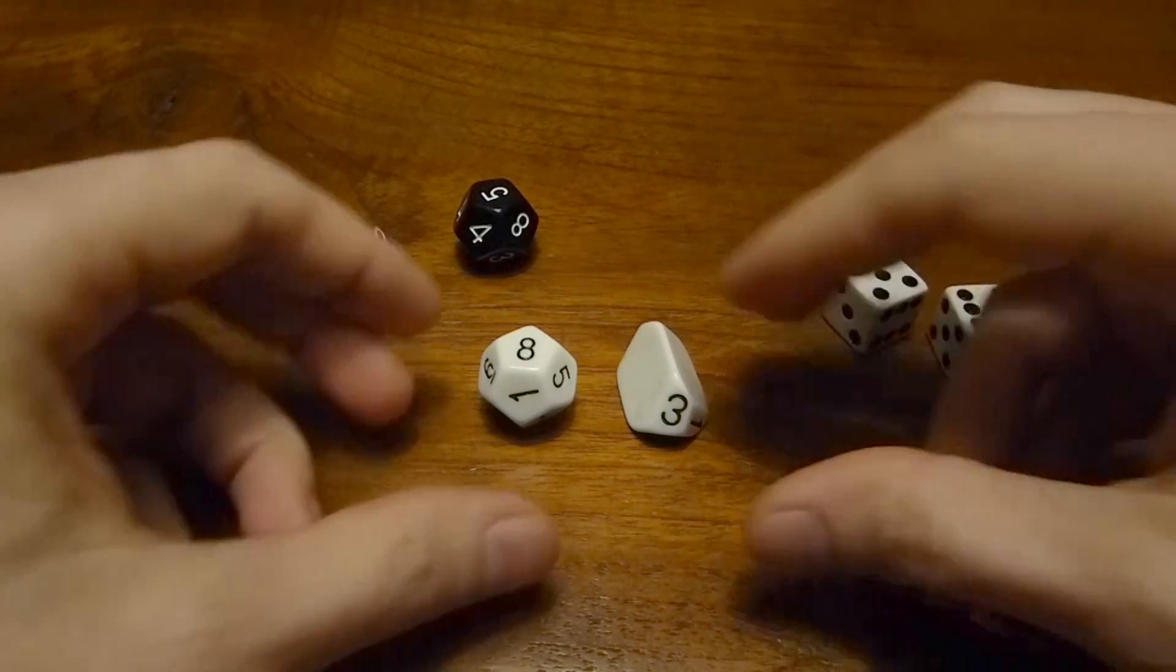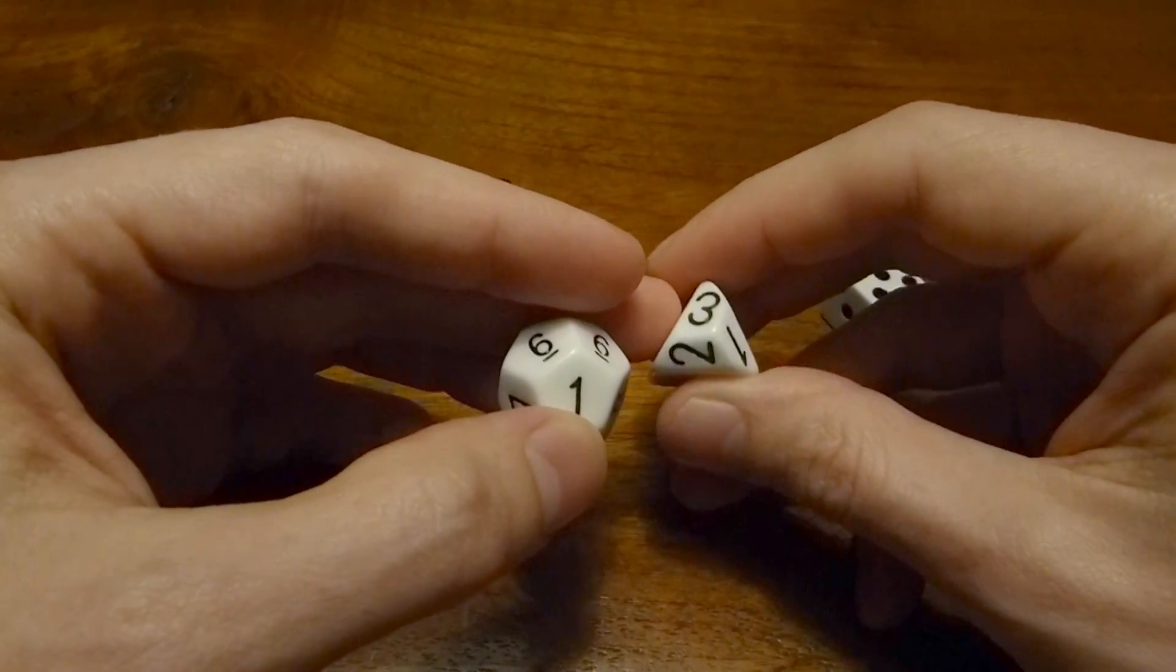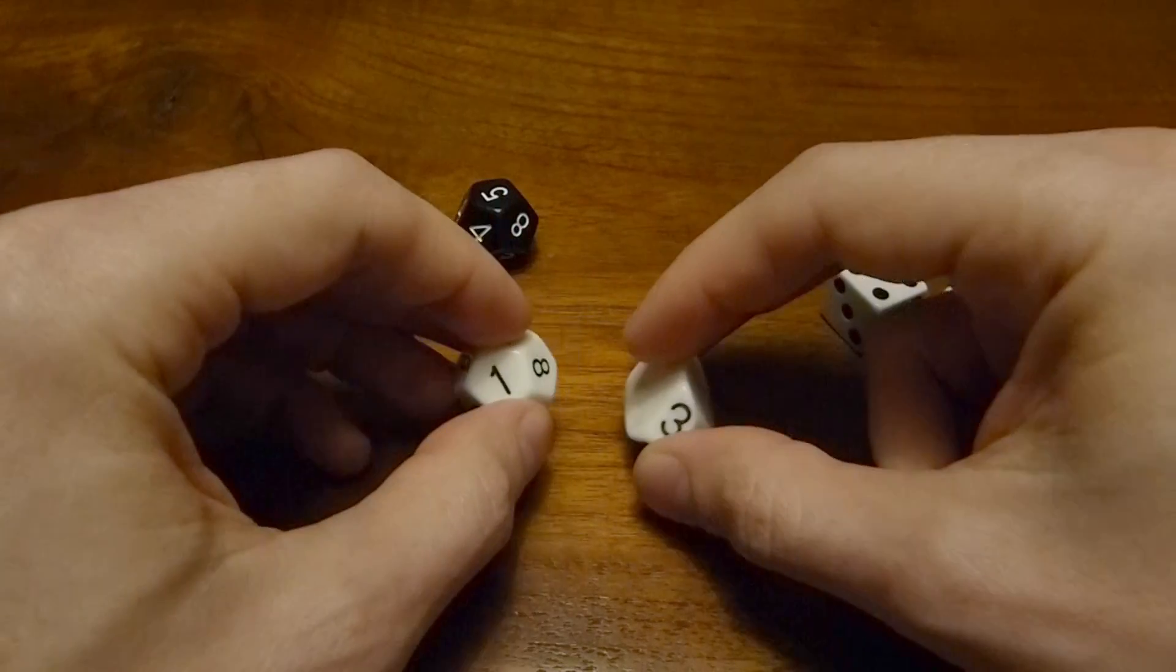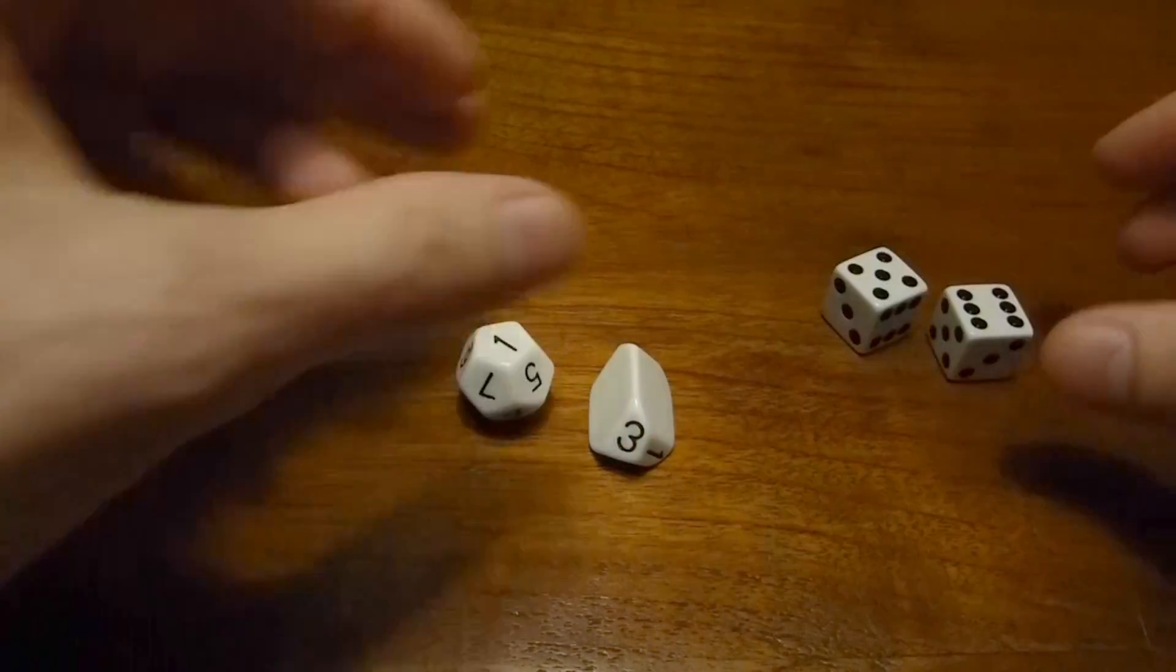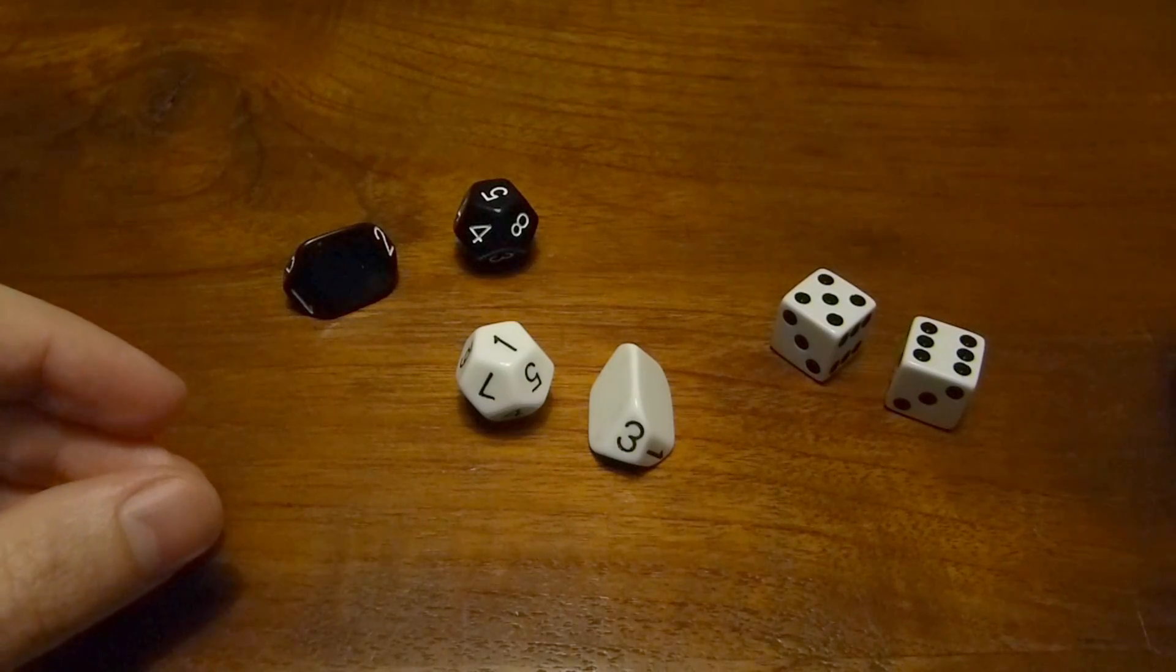Here's another way to think about it. 12 possibilities on the D12, 3 on the D3. 3 times 12 is 36, so there are 36 possibilities, which is the same as the 6 times 6 possibilities from the 2D6.